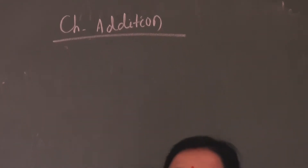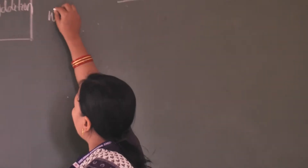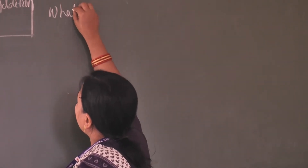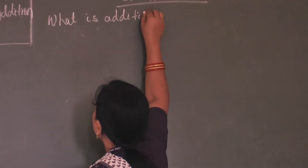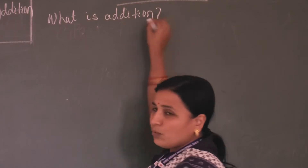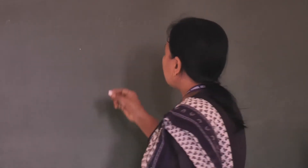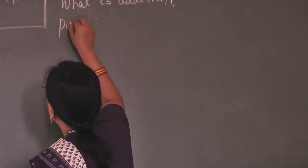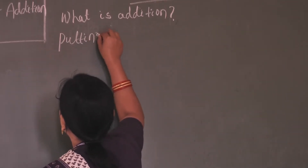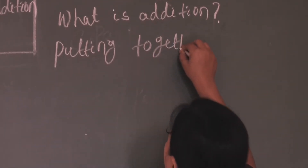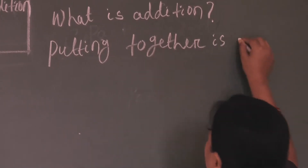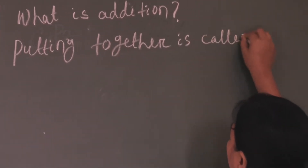So what is Addition, children? Do you know? Now you see the leaves — two leaves and two leaves, and these two leaves make four. So you are putting together. What is Addition, children? Putting together is called Addition.